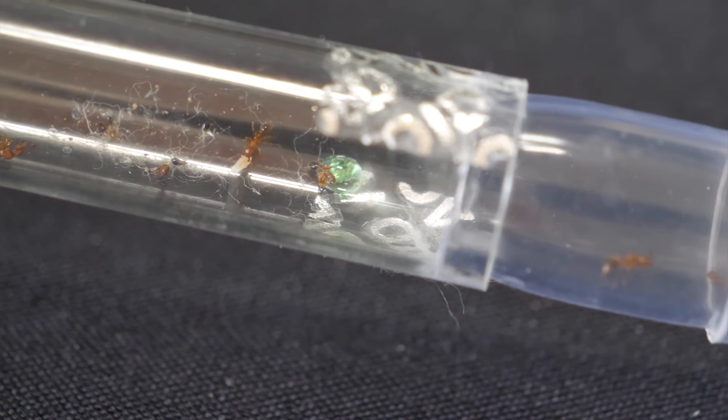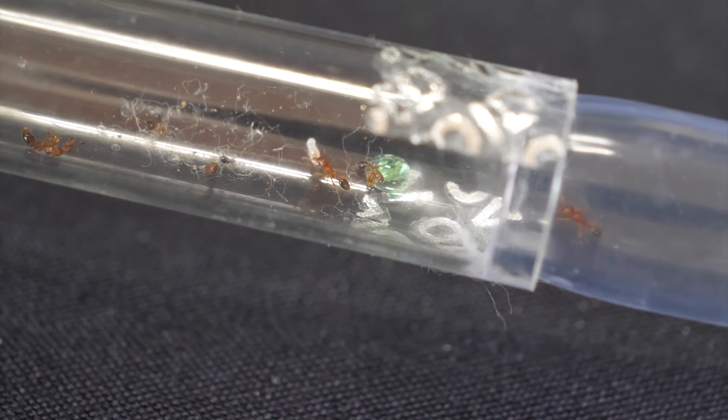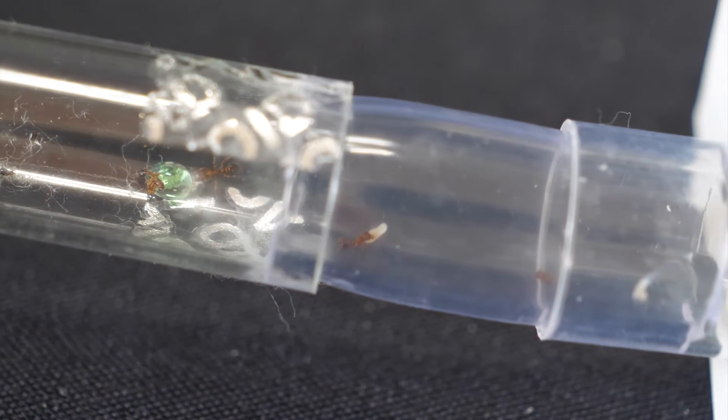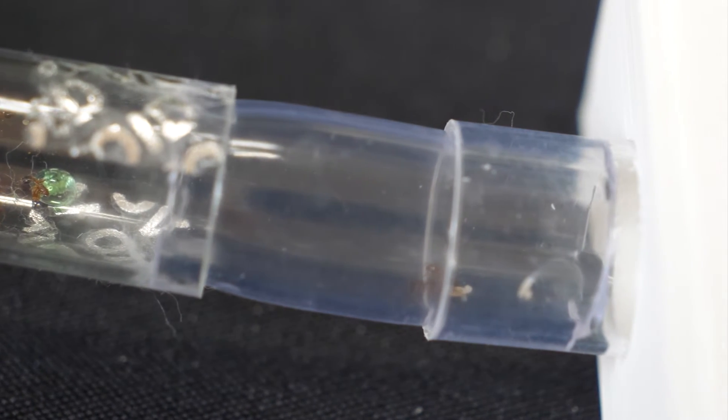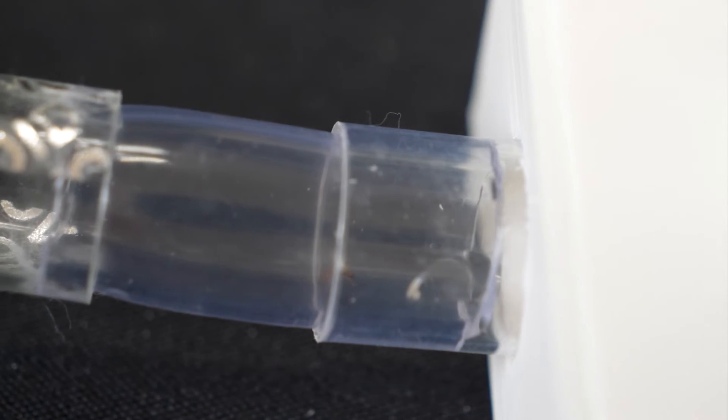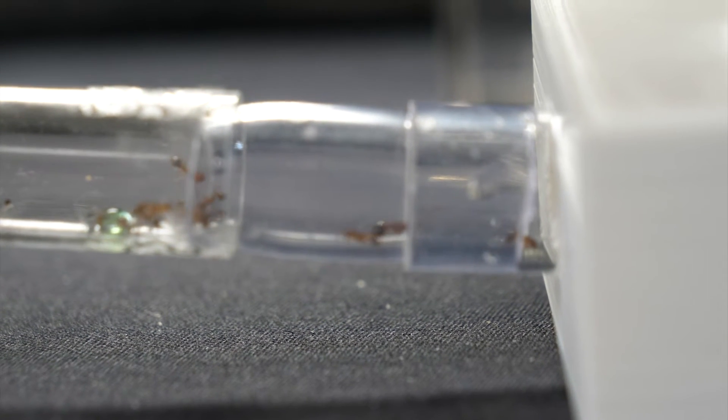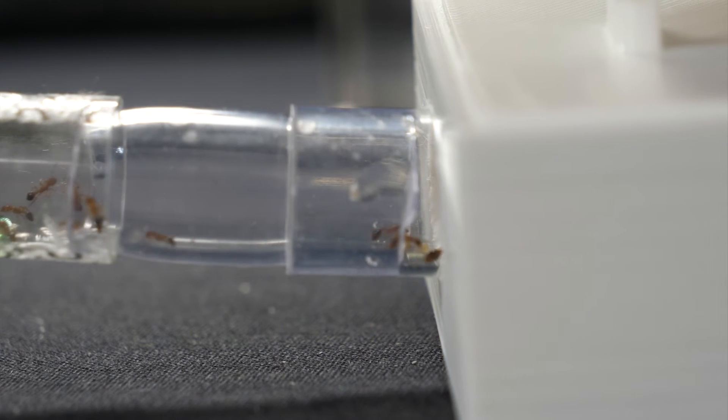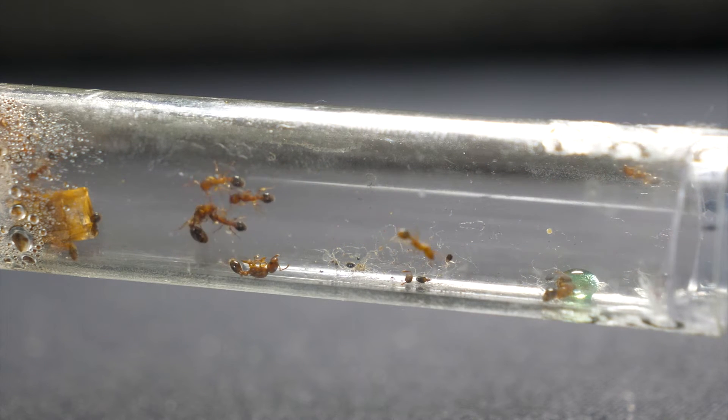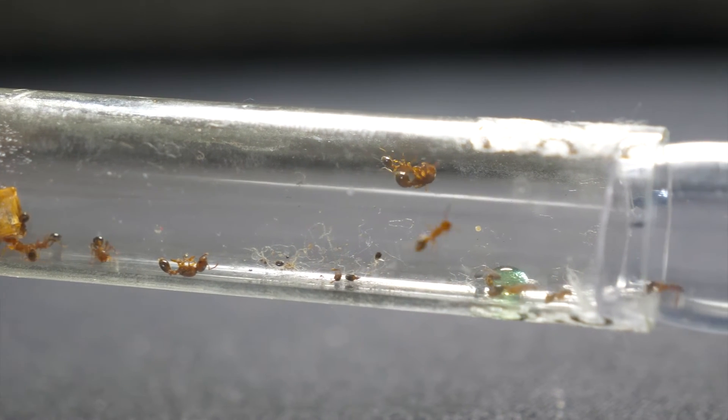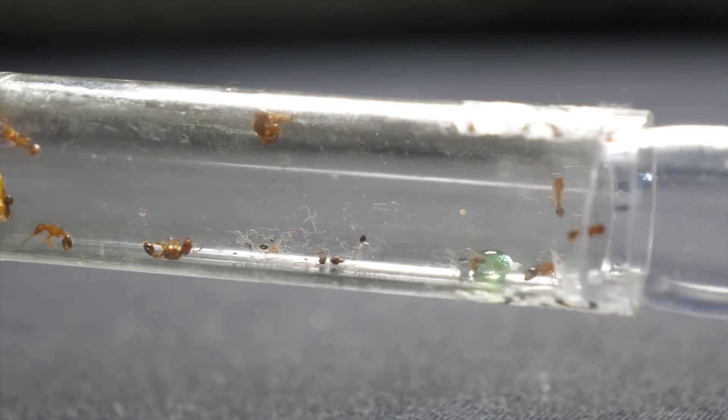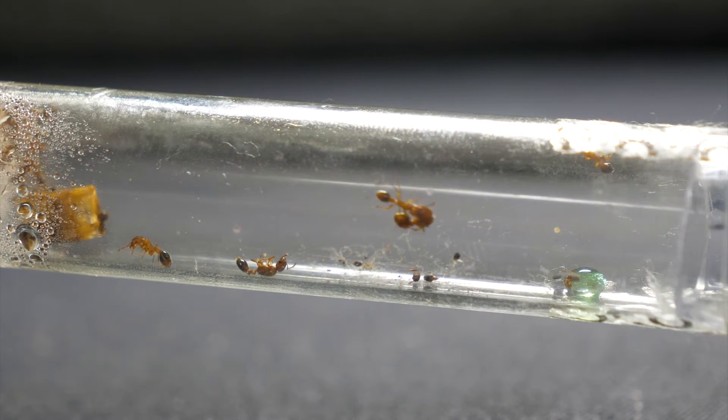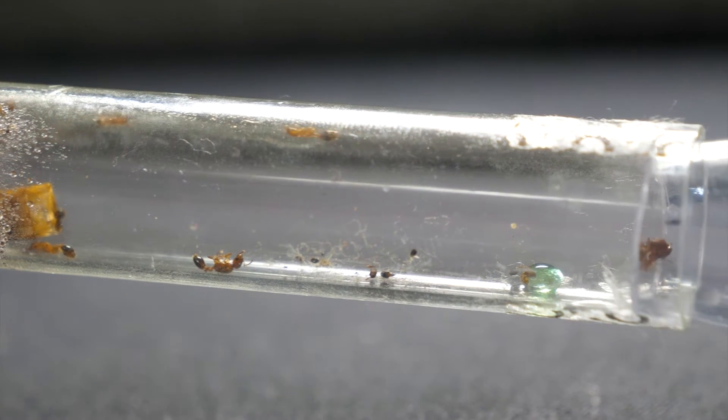This worker here seems to be struggling a bit with this larva, but she eventually makes her way to the new nest. And here comes the second queen gracefully entering. At this point the workers seemed to have enough of the queens being indecisive, and so this worker grabs the third queen and ant-handles her into the nest. And at this point the ants began making many trips to make sure they got every last larva and egg into the nest. No one left behind.